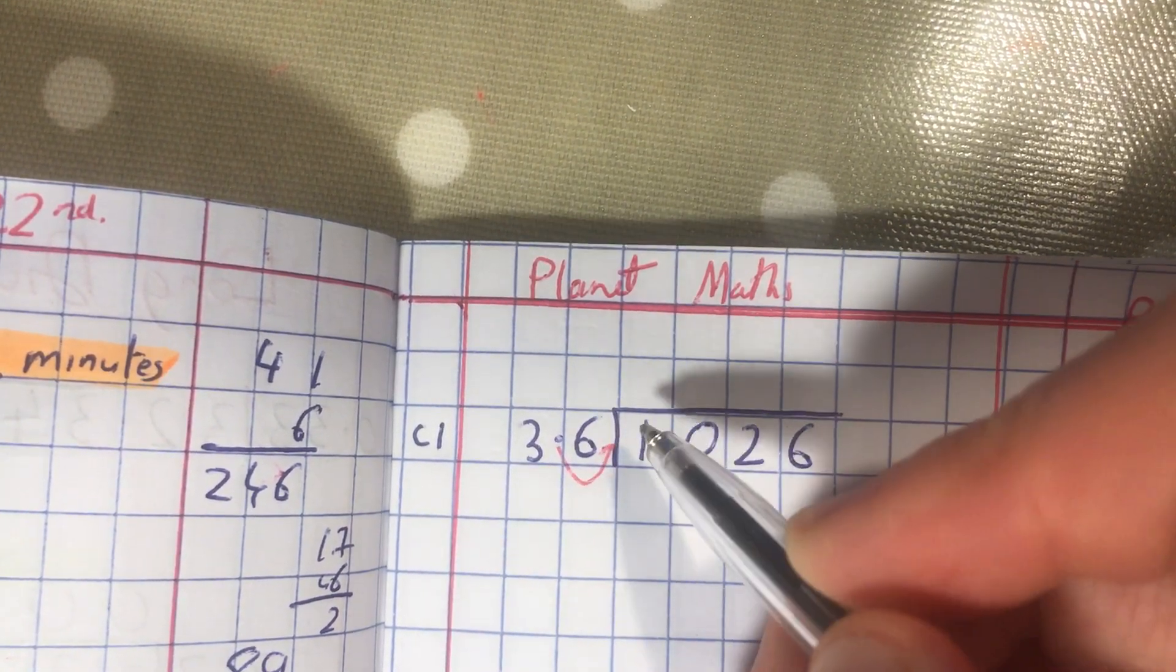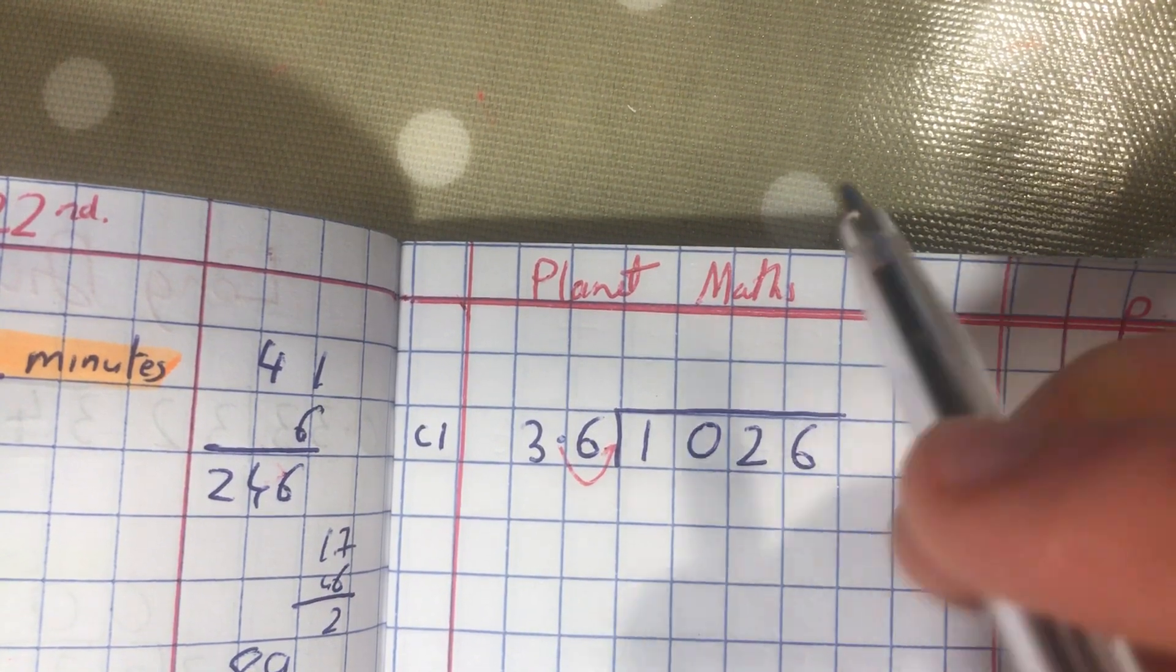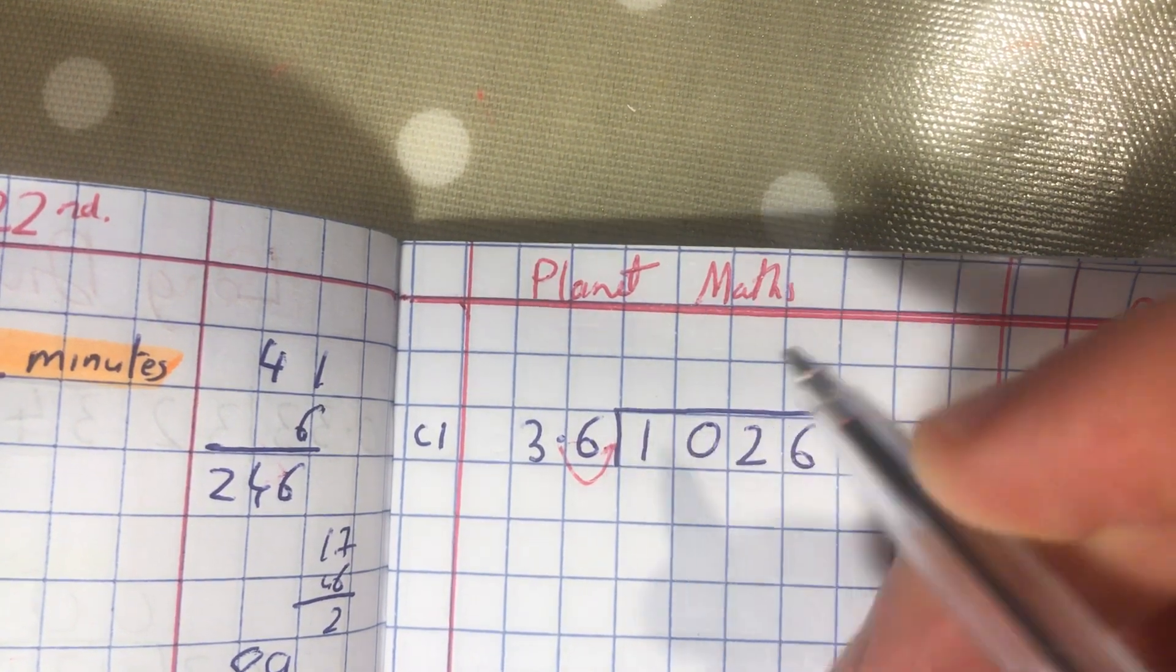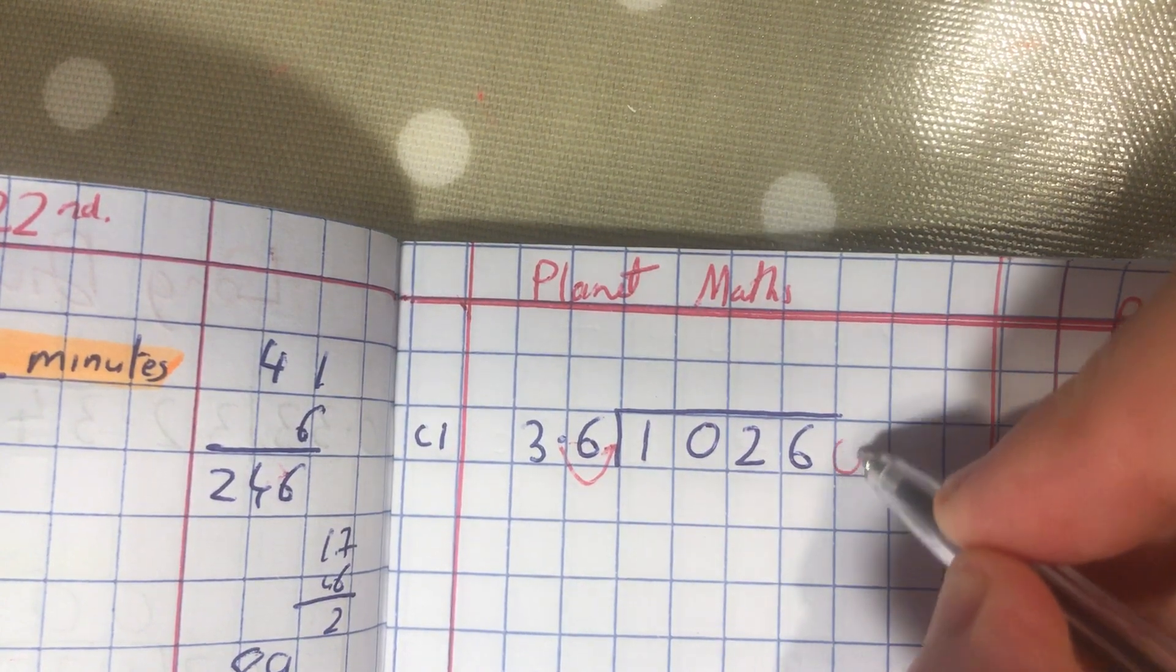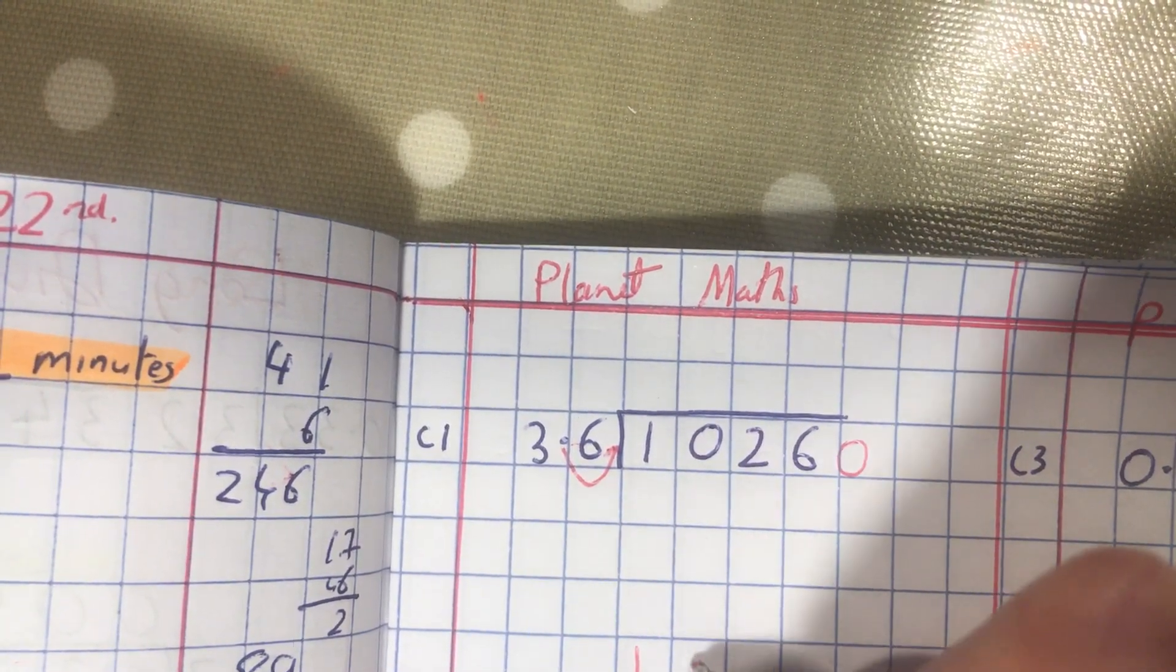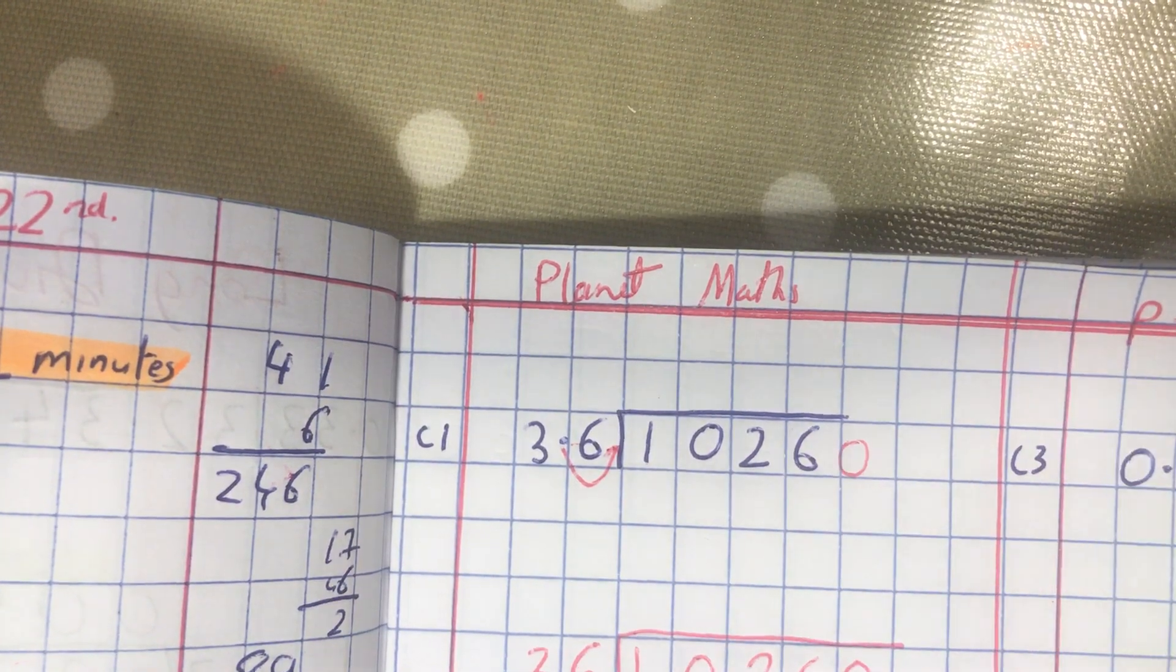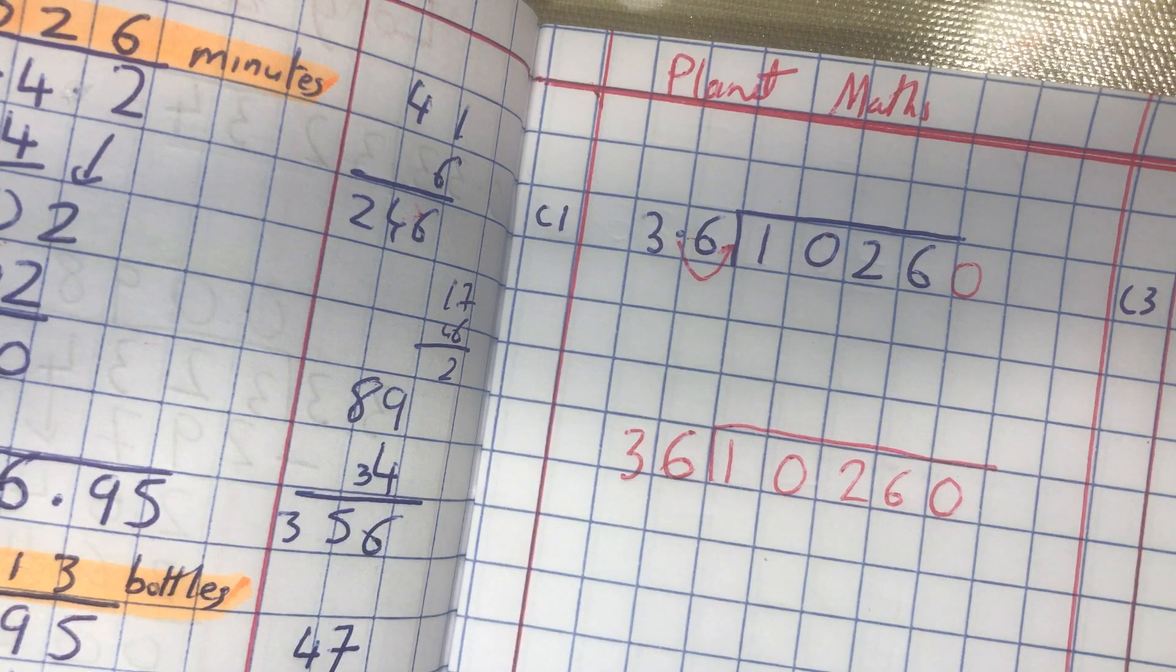So you jump that one place to the right. But there's no decimal to jump in here, so what we did really here was we multiplied that by 10 to jump the decimal one place to the right and get rid of it. So we must do the same thing in here, multiply this by 10, and how you do that is you add a zero. So what our new sum is going to become is 10260 divided by 36 and off you go. That's just a long division sum that you'll have no problem with because you're flying at those.